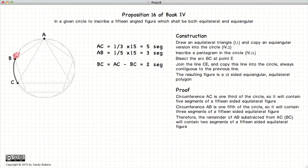we are left with two fifteenths of a circle, or in other words, two segments of our 15-sided polygon.